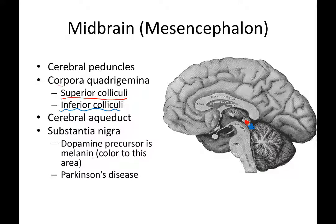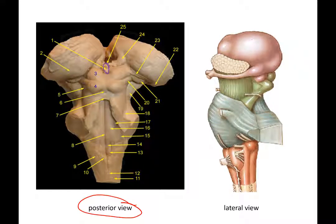The pineal gland, which we discussed in our last lecture about the diencephalon, is the region of the brain that secretes melatonin. It's part of the epithalamus, located just above the corpora quadrigemina on the posterior side.